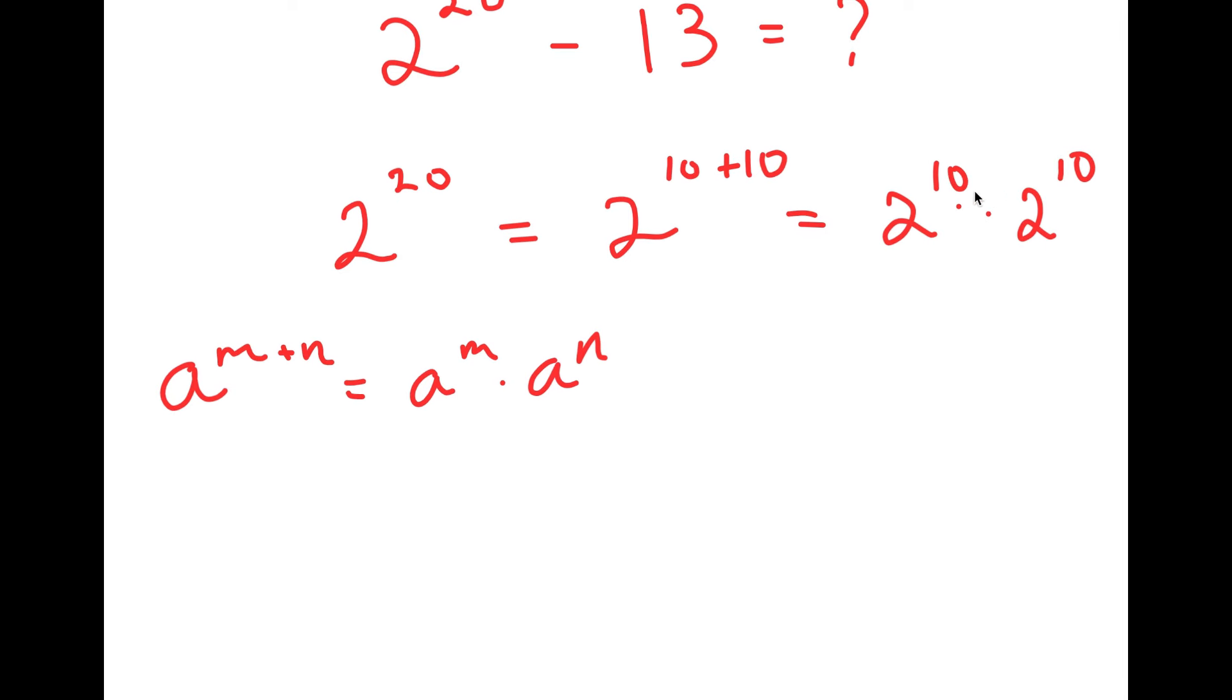2 to the power of 10 is equal to 1024. So this is equal to 1024 times 1024 minus 13.